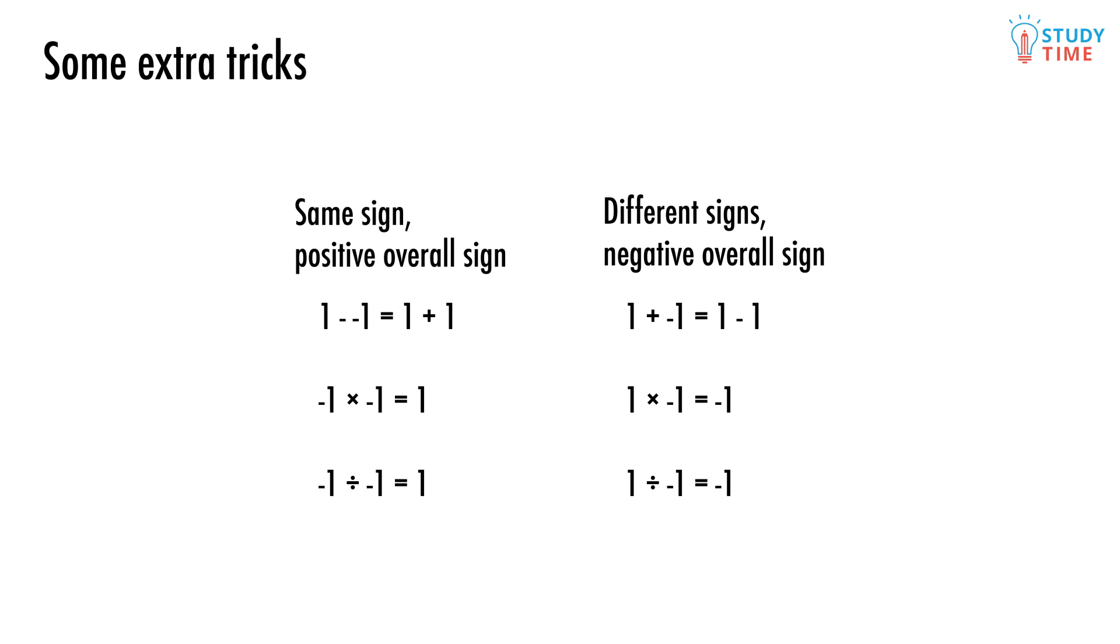Similarly, with multiplication, a negative times a negative is positive, because they have the same sign. But negative times a positive is negative, because they're different signs. The same goes with division.